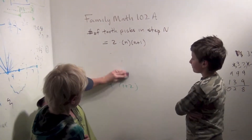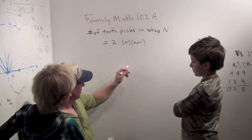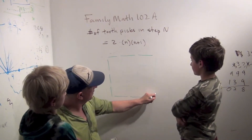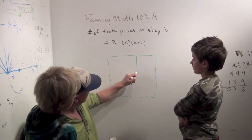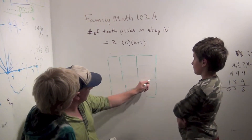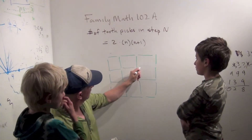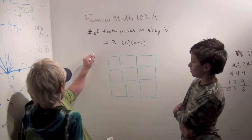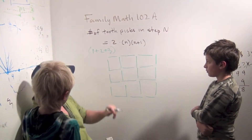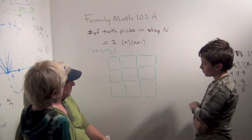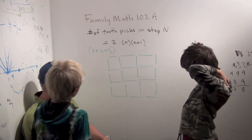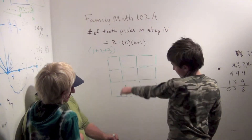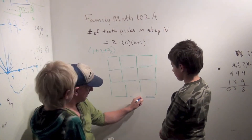Now let's move on to our 3 by 3. Now we're looking for 1 plus 2 plus 3's. Can we find 1 plus 2 plus 3 four times? The 3's are probably the easiest ones to see — the 3's can be the edges.